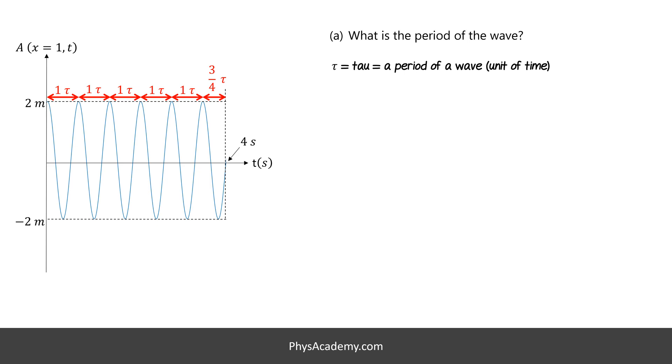Let's write this down in a mathematical format. Here, the time passed, delta t, is 4 seconds. The number sign, is the number of periods in this 4 second, which is 5 and 3 quarters. Tau is the period. After plugging in the numbers, it turns out the period is 16 divided by 23 seconds. For now, I'm going to leave it as it is, but you could divide and round this number. Regardless, this is an acceptable answer for this part.